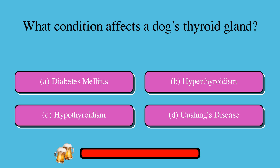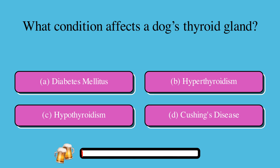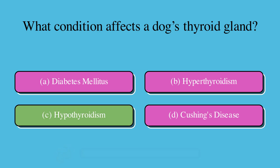What condition affects a dog's thyroid gland? A. Diabetes mellitus, B. Hyperthyroidism, C. Hypothyroidism, or D. Cushing's disease. The correct answer is C. Hypothyroidism.